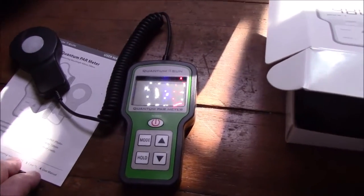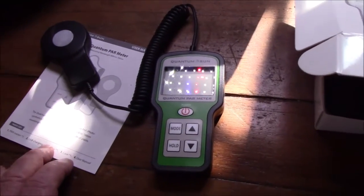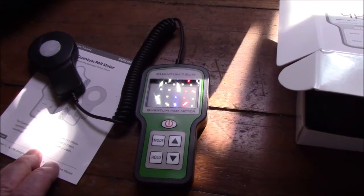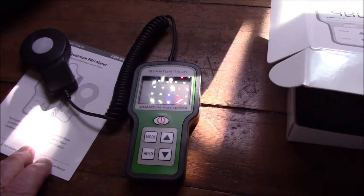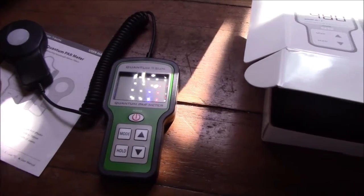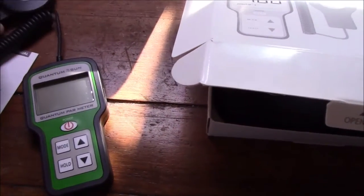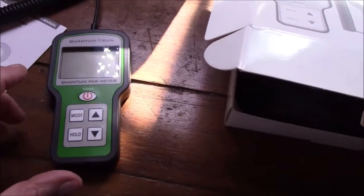Basically what this does, it reads the light. It tells you what the PAR is. It measures light from 400 to 700 nanometers, which is what plants can use, and it tells you how much light your plants are getting.